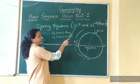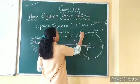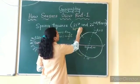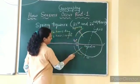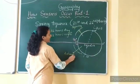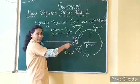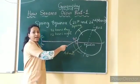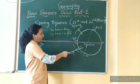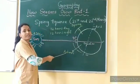After 21st March, in the northern hemisphere there will be spring, and in the southern hemisphere there will be autumn. As in the northern hemisphere there is spring, days are longer and nights are shorter. Accordingly, in the southern hemisphere, as there is autumn season, days are shorter and nights are longer.